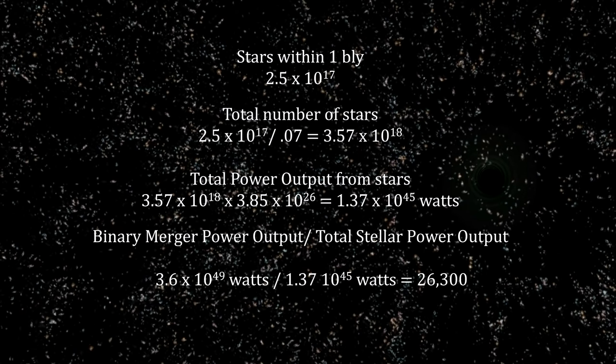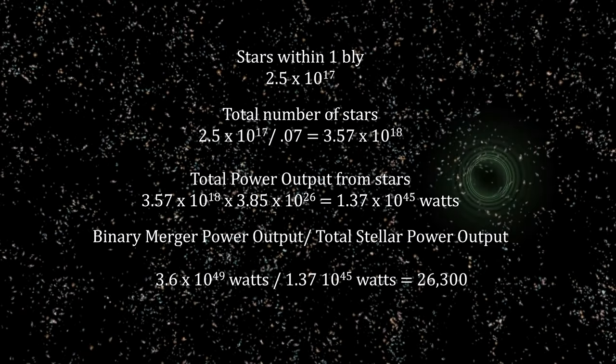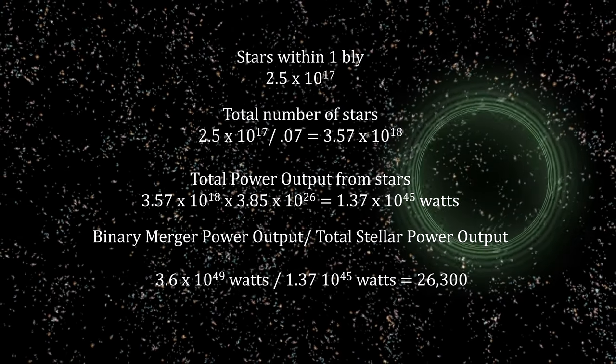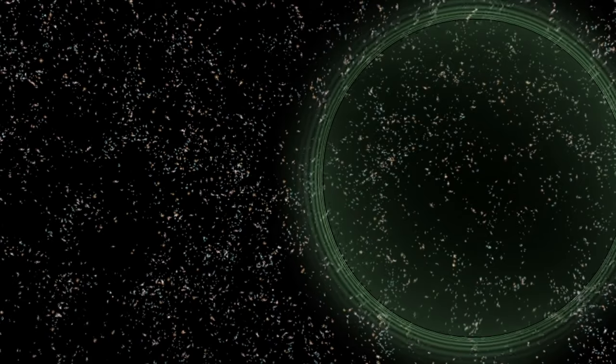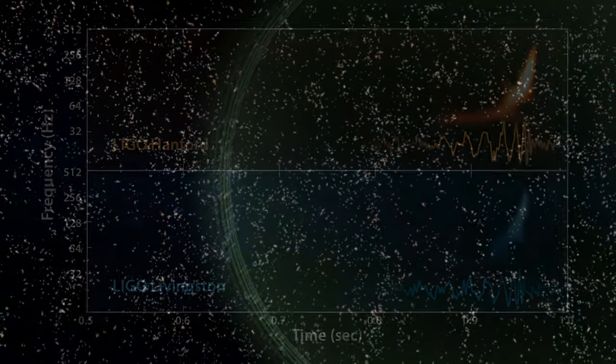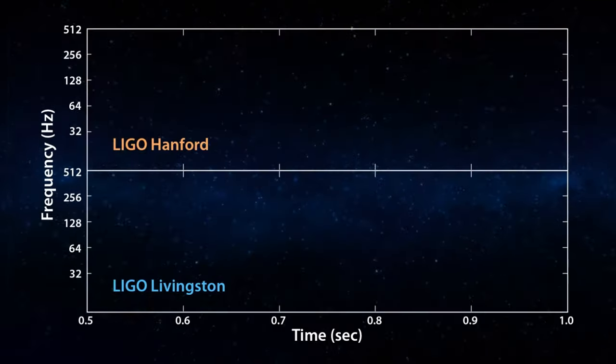The power generated over the last 20 milliseconds by this merger of two stellar mass black holes is 26,000 times greater than the combined power of all the light radiated by all the stars in the universe over that same period of time. That's the signal we saw in September 2015, a billion years after it happened.